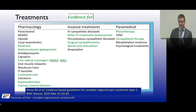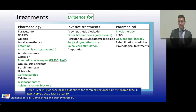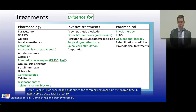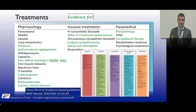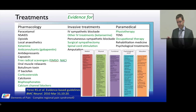There is evidence for IV ketanserin, a 5-HT blocker, and surgical sympathectomy. Spinal cord stimulation has a fair amount of evidence, but patients need to be appropriately selected, screened, and undergo a proper trial before proceeding. Physiotherapy and occupational therapy are supported. When seeing a patient, the approach should be five-pronged: treat medical, physical, functional, psychosocial aspects, and provide education, with the ultimate goal of pain reduction and mobilization.